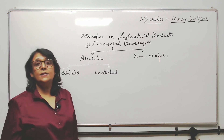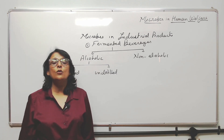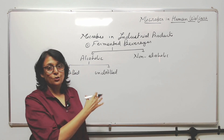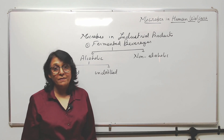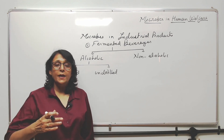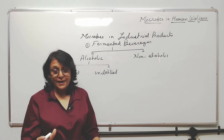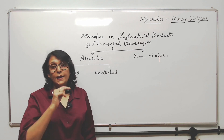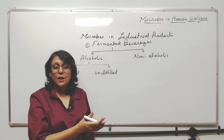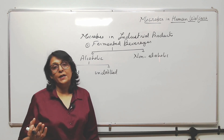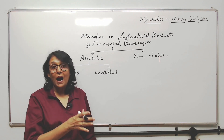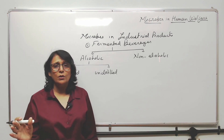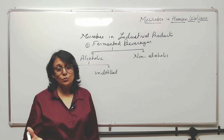When yeast — Saccharomyces cerevisiae — is used for fermentation to obtain alcoholic beverages, the drink depends on the raw material used. Like if you use grapes, the alcoholic drink obtained will be known as wine. If we use malt, then the drink is going to be beer and so on. The raw material is one major factor.